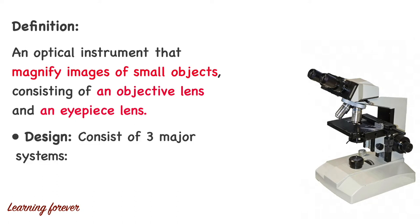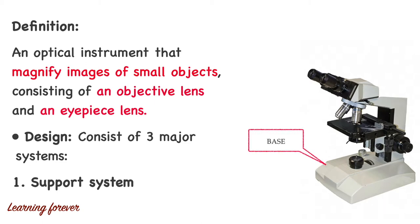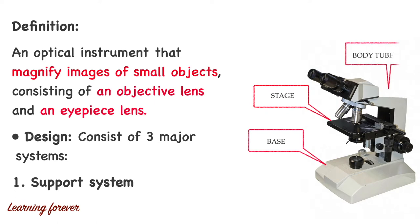Compound microscope consists of three major systems. First is the support system, which comprises of the base, stage, and body tube. This component of the microscope does not have any role in magnification of the image. It only plays a supporting role and hence it is called the support system of the microscope.